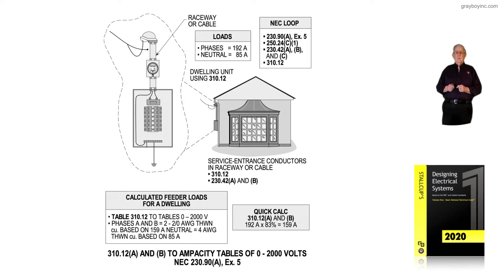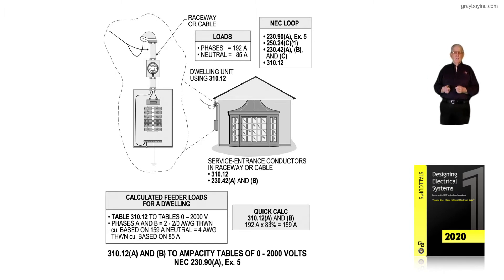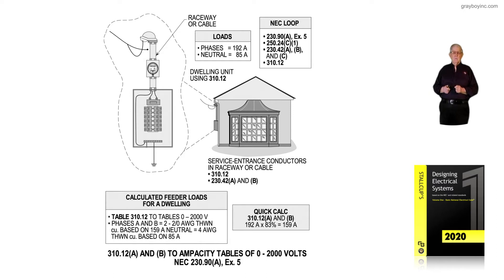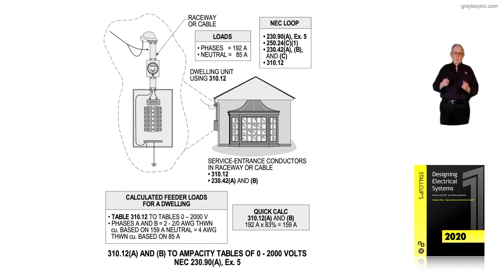This illustration deals with a dwelling unit where you had four-aught conductors. You could drop those conductors down to three-aught in accordance with Table 310.12. That would naturally be permissible. Table 310.12 has been numbered and located in the 2020 edition.